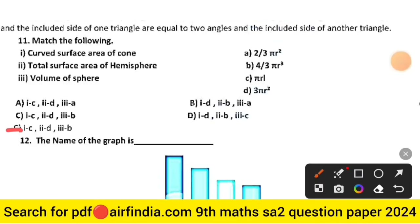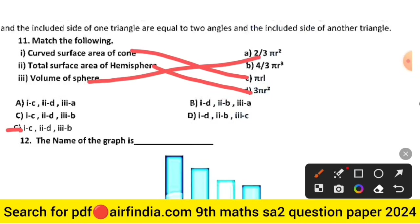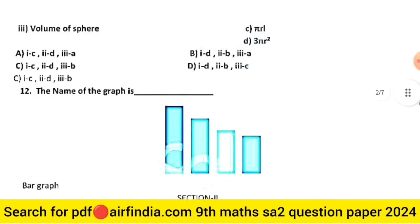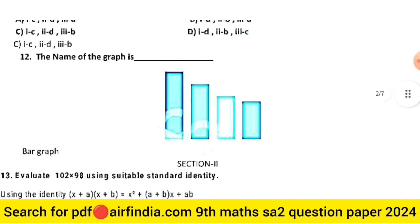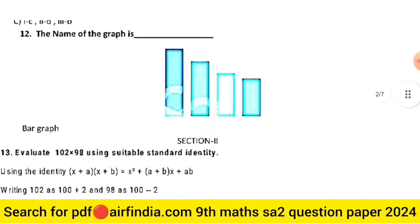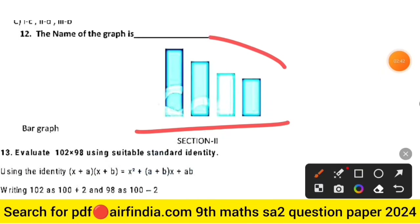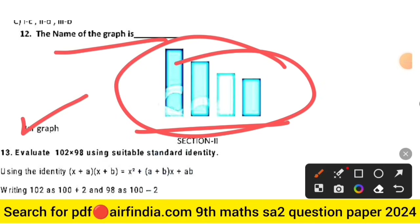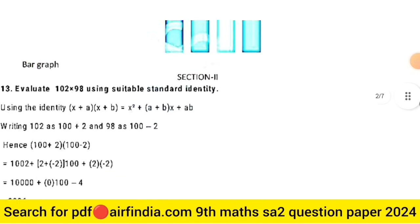Question 11: match the following — the right answer is option C. The matches are: first is C, second is D, and the third is B. The remaining option is B. Question 12: the name of the shown graph is bar graph.